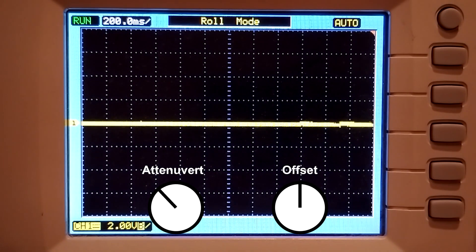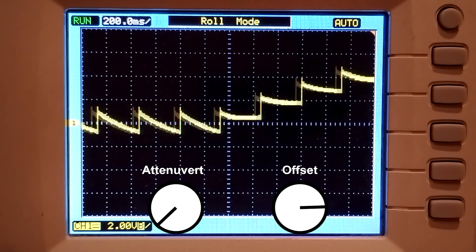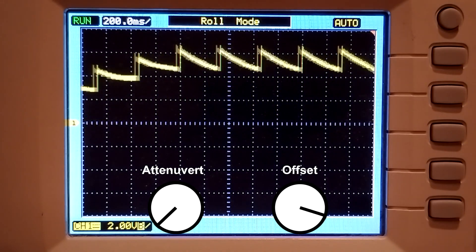When turning the attenuverter knob counterclockwise, a falling sine wave becomes visible. With the offset knob, we can shift the whole waveform up and down.